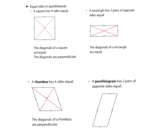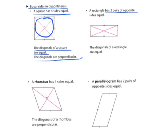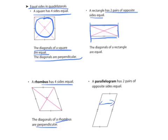Equal sides and quadrilaterals is another thing we could discuss. A square has four equal sides, and the diagonals of a square are equal and are also perpendicular. A rectangle has two pairs of opposite sides that are equal in length — these sides are equal to these sides. The diagonals of a rectangle are also equal, but they would make an intersecting line. A rhombus also has four equal sides — it is like a square but tipped sideways, and the diagonals of a rhombus make perpendicular lines. A parallelogram has two opposite equal sides — the sides that are parallel are equal in length.